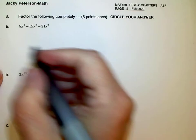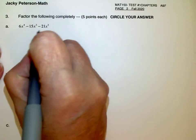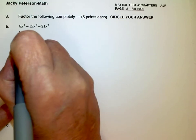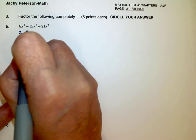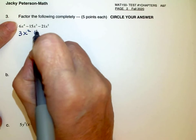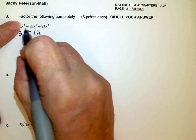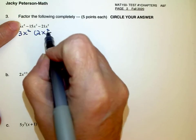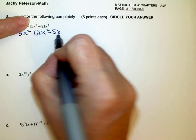These are all factoring problems. First thing you want to do is remove the greatest common factor. In this case the greatest common factor is going to be 3 and x squared. From the 6 I'm removing a 3, that's a 2. From the 4x I'm removing x squared, that gives me x squared minus. From the 15 that gives me a 5 and an x.